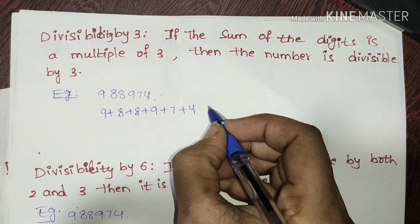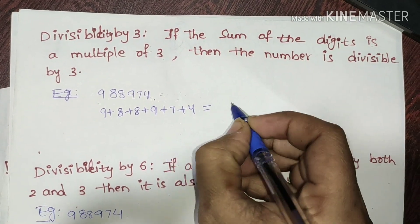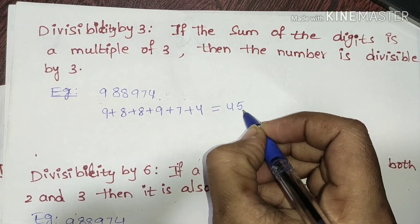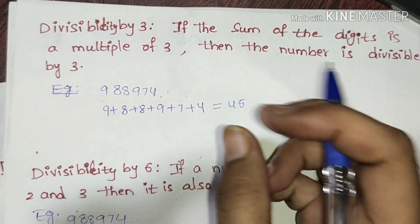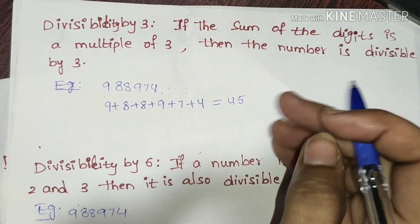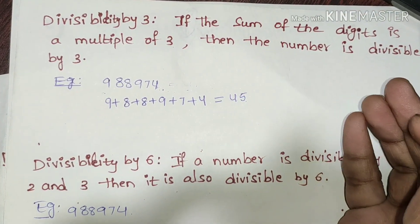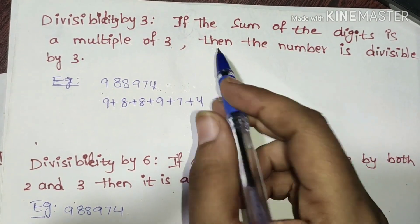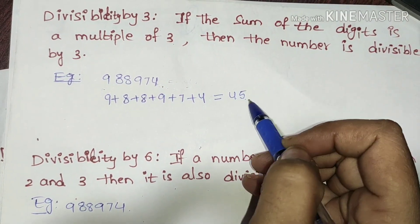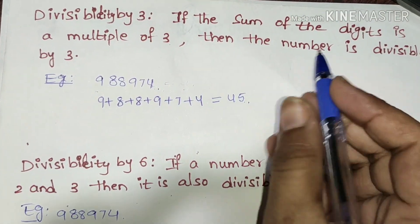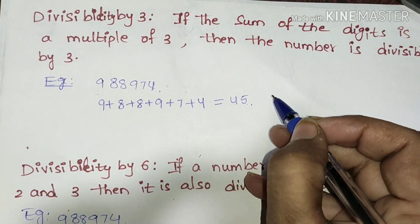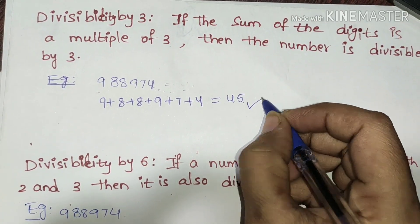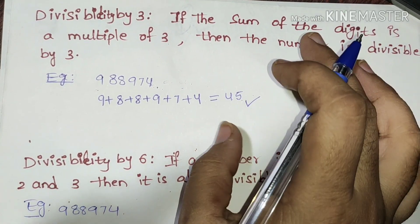For the example, 9 plus 8 plus 8 plus 9 plus 7 plus 4 equals 45. The sum is 45. Since 45 is in the 3 times table, the given number is divisible by 3.